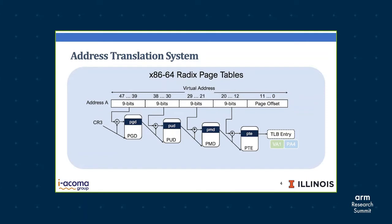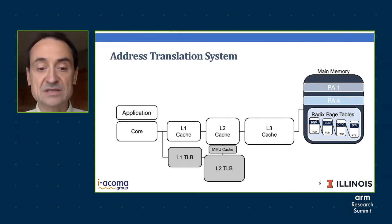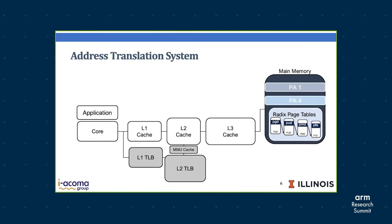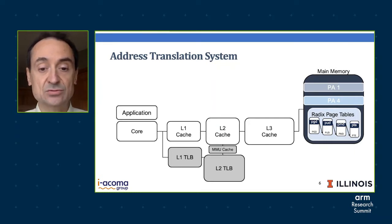The way it works is as follows. Whenever the core issues a load and the TLB misses, the hardware has to go to memory, grab the first level of the translation, dereference it, go to memory to get the second level, dereference it, then go to the third, and so on. You can see that this is a very costly process. As a result, designers have put L2 TLBs, which are much bigger, and they have even put MMU caches, which cache end-to-end translations, so that if the program has locality, we only have to go to the MMU cache to get the full translation and the final entry to load into the TLB.